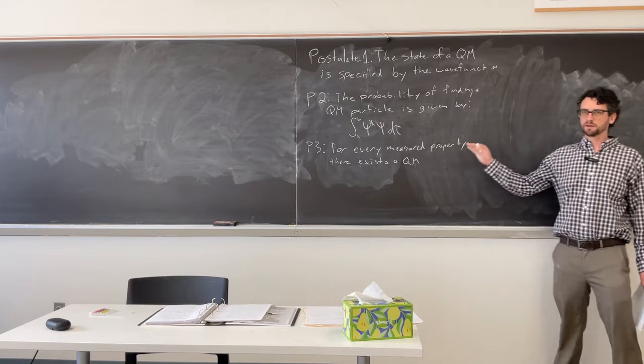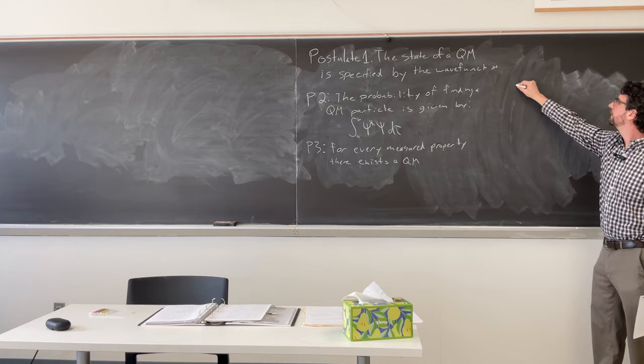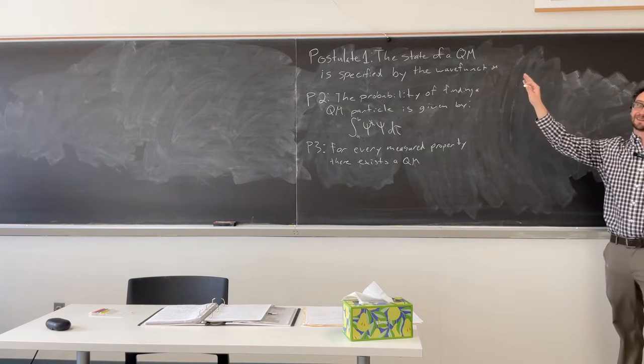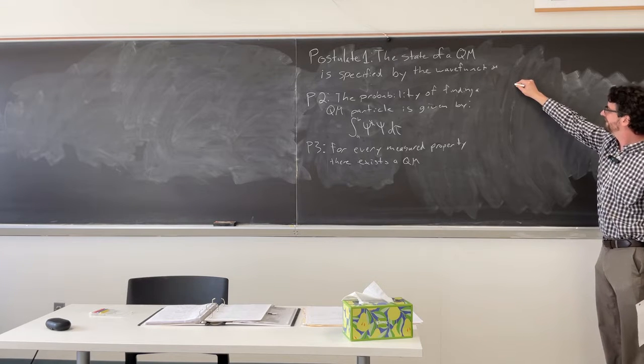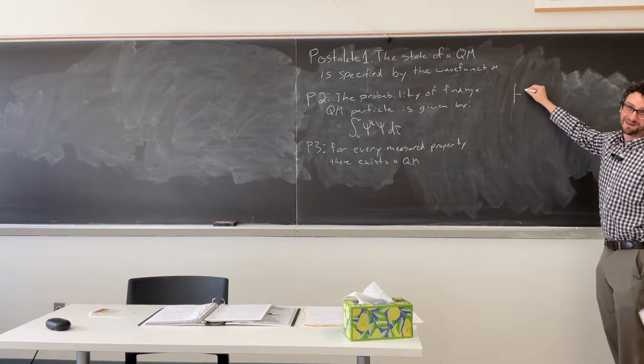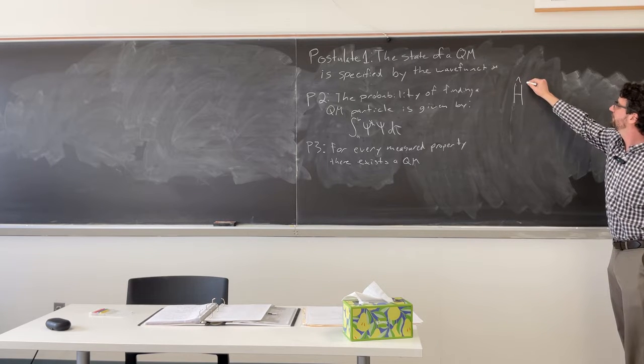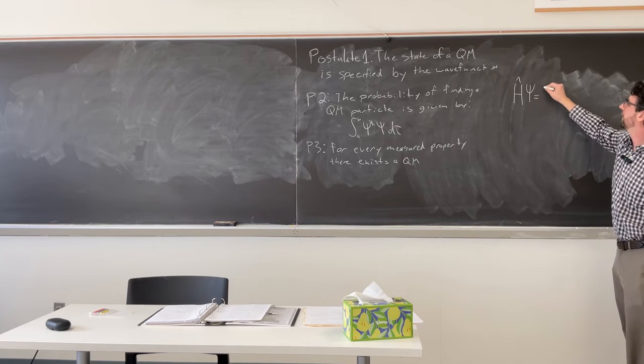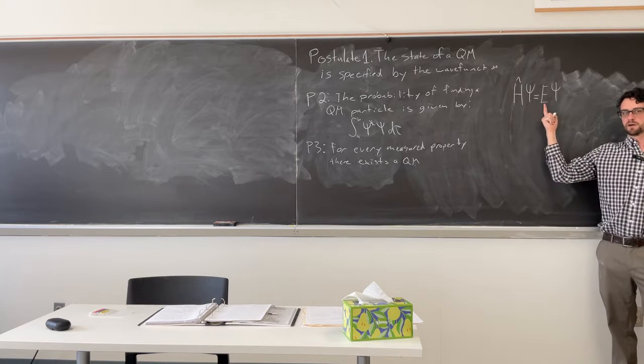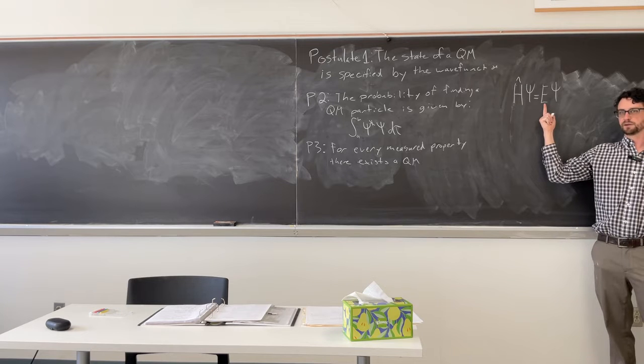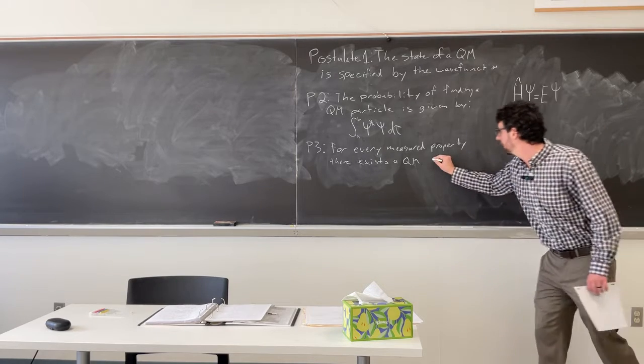Or let's look back at the Hamiltonian equation. What was the Hamiltonian equation again? You don't need the whole thing, just in the simplest form. You could even go even simpler than that. H what? Yeah. Operating on what? Yep, and what's that spit out for you? Yep, okay. This is our observable, right? What do we need to calculate that observable? Yeah, we need an operator. So, for every measured property, there exists a quantum mechanical operator.